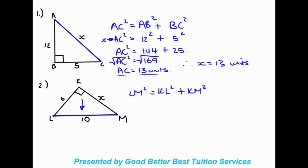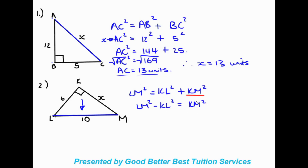Let's write out the equation. LM is the hypotenuse, so LM squared equals KL squared plus KM squared. The unknown is KM. To make KM the subject, we rearrange: LM squared minus KL squared equals KM squared. Writing it with the unknown on the left: KM squared equals LM squared minus KL squared.